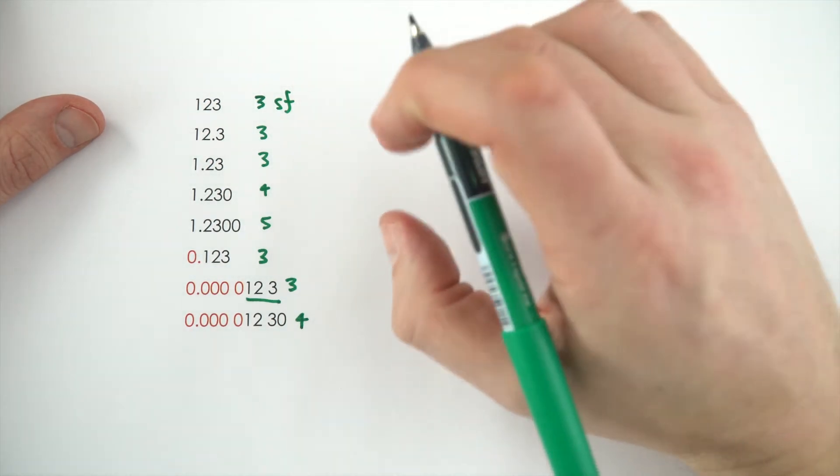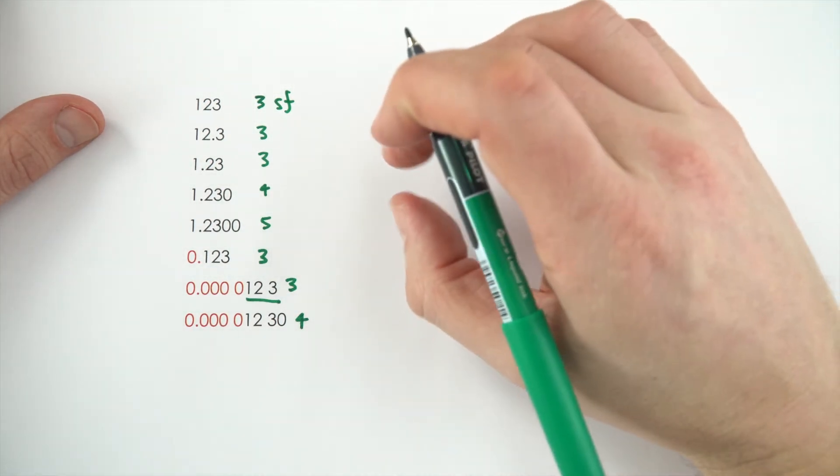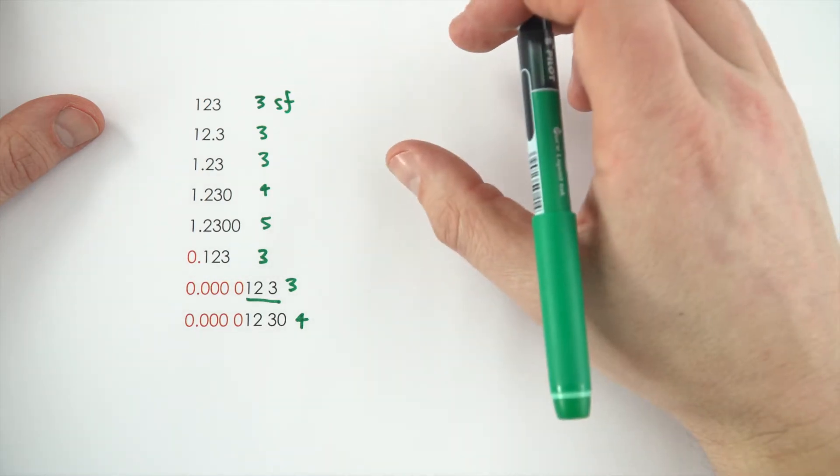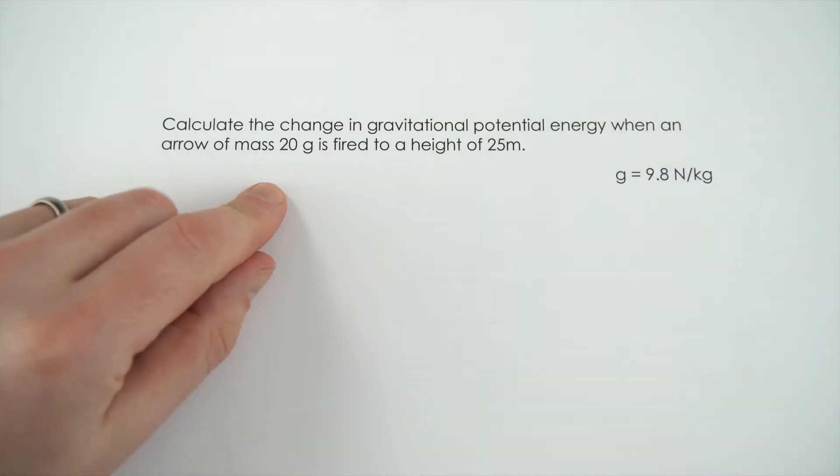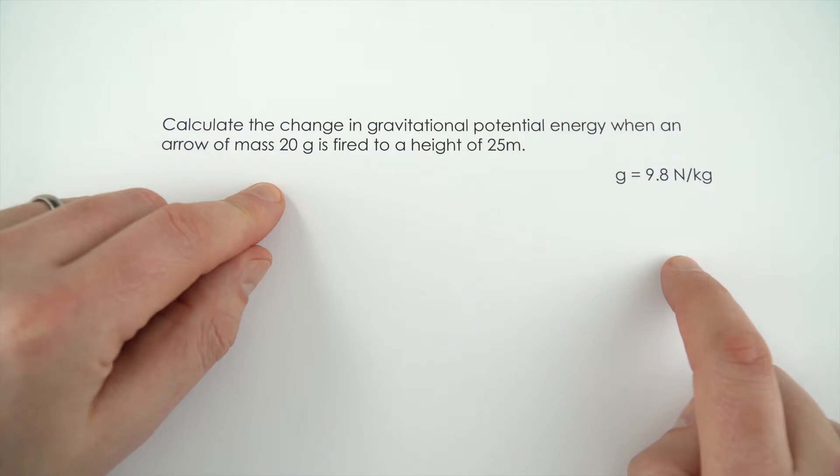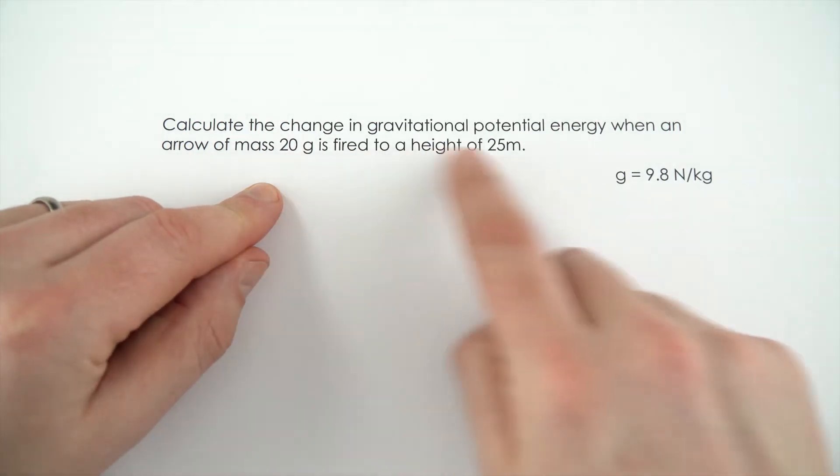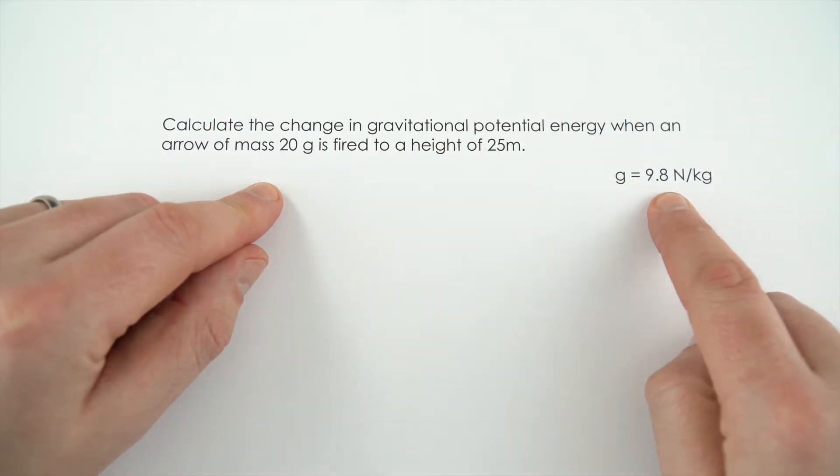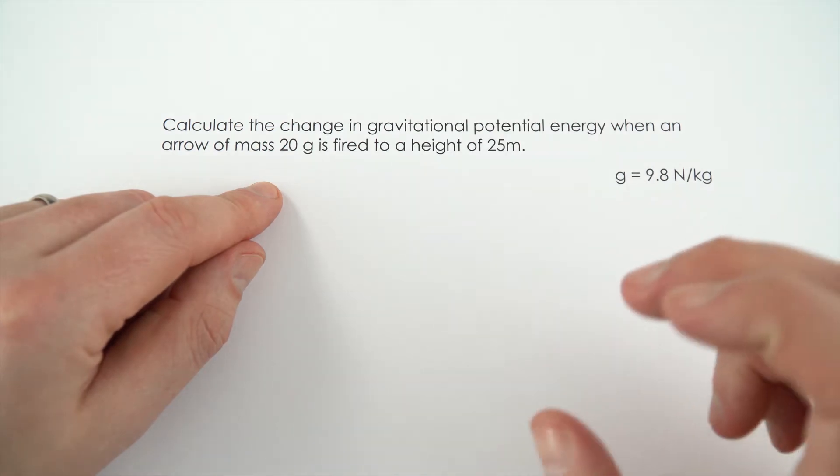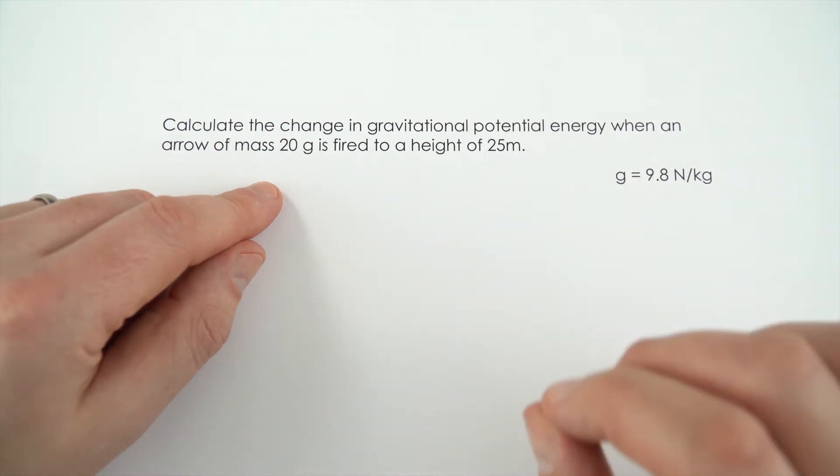So, it's always worth checking when you look at your raw data in a question, how many significant figures all of that data is given to. In this question, for example, we've been given all of our data to two significant figures. So, 20, 25, and 9.8. And therefore, when it comes to quoting our final answer, we should really give it to two significant figures as well.